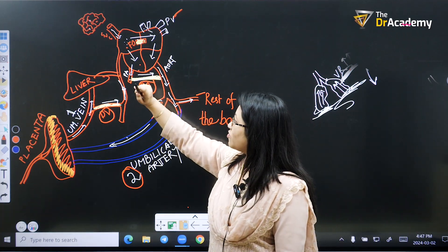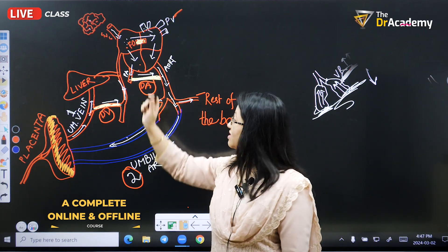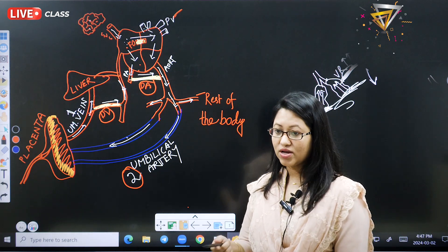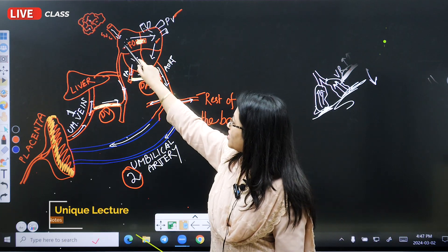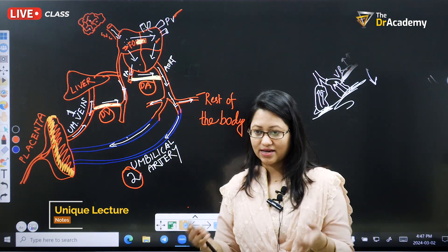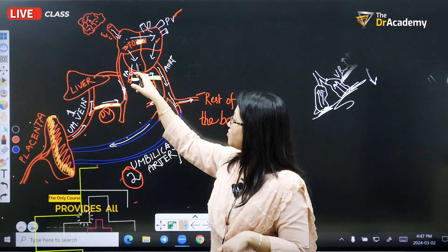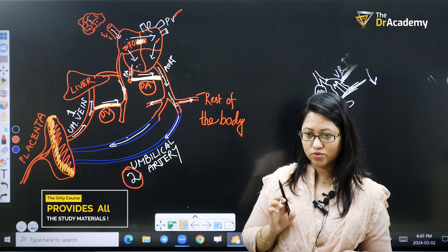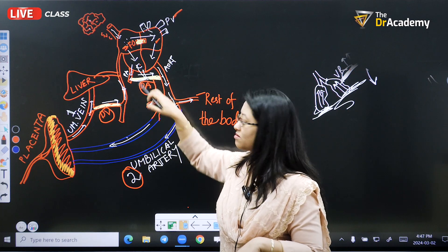For the foramen ovale, blood goes from the right atrium to the left atrium. If they tell you blood goes from left atrium to right atrium, that is wrong. In the adult the pressure on the left is higher, but in the fetus the pressure on the right is higher — that is why the direction is opposite. Foramen ovale is like an ASD — a defect in the interatrial septum. If they say blood goes from the ventricle directly to ductus arteriosus, that is also wrong; it goes from the right ventricle to the pulmonary artery, then through the ductus arteriosus.